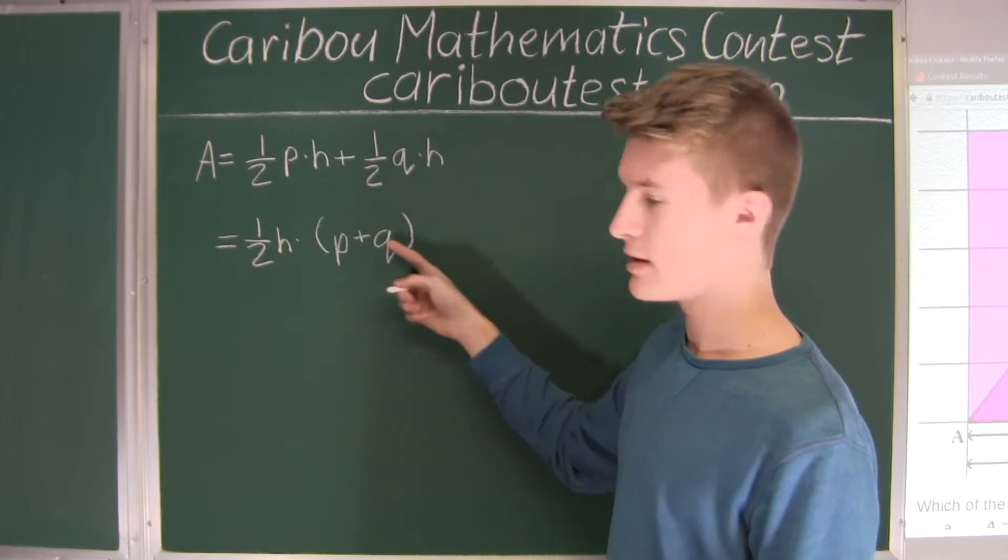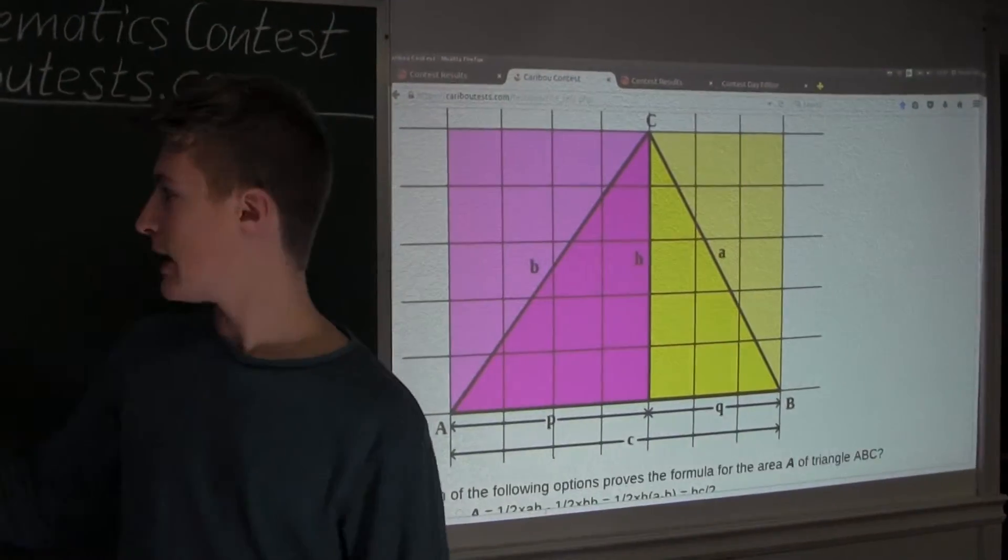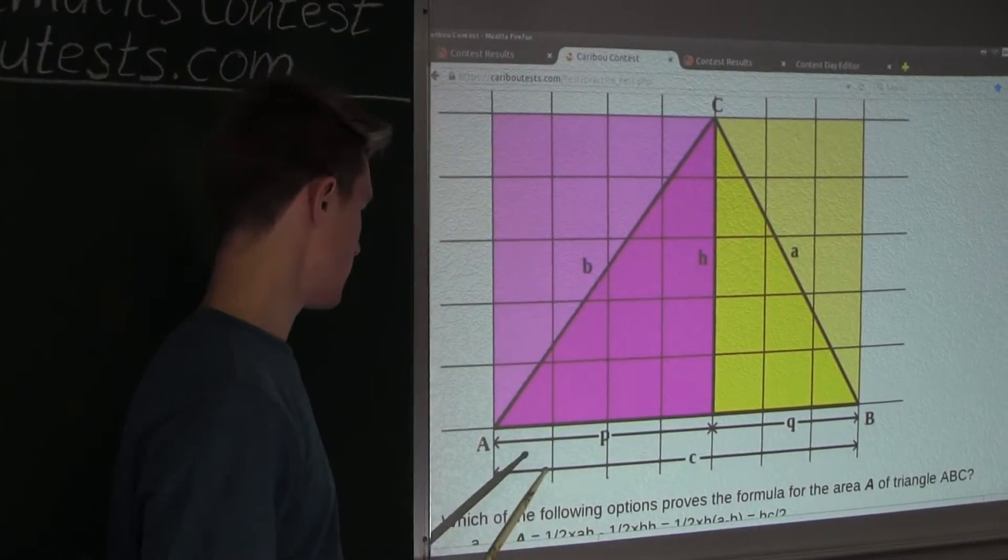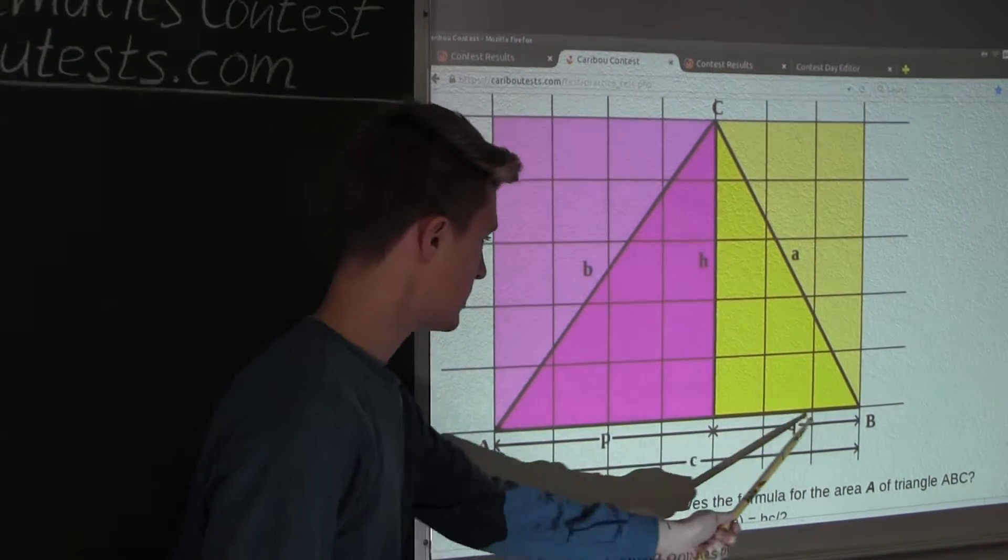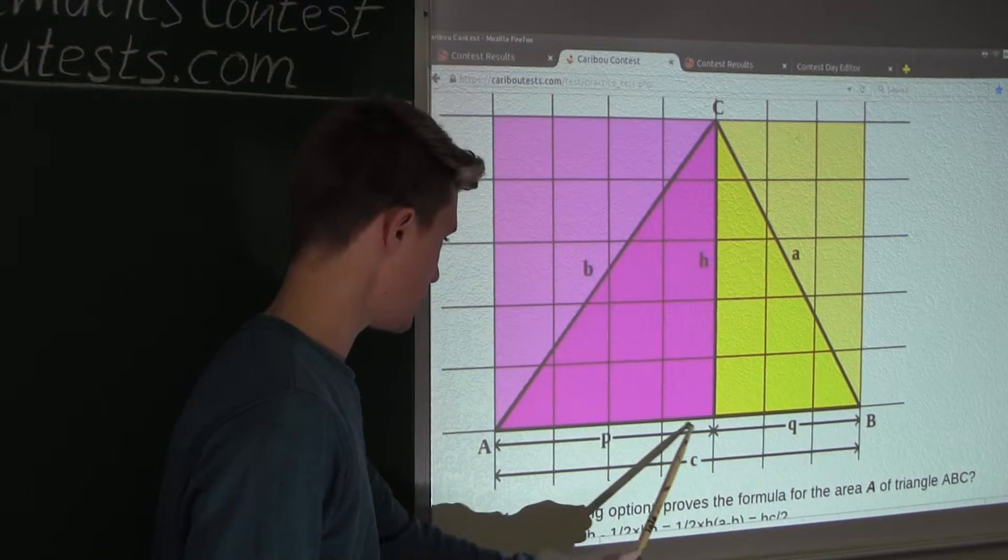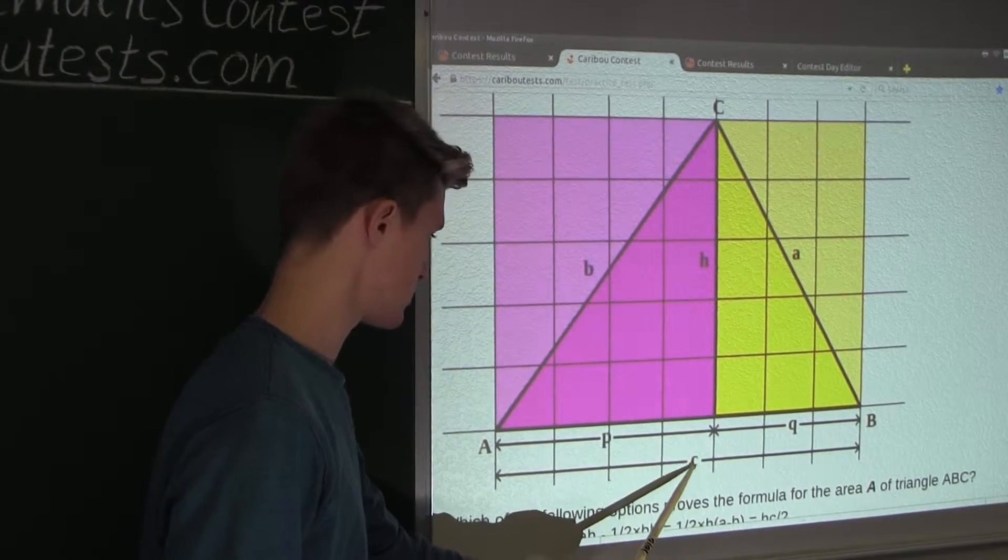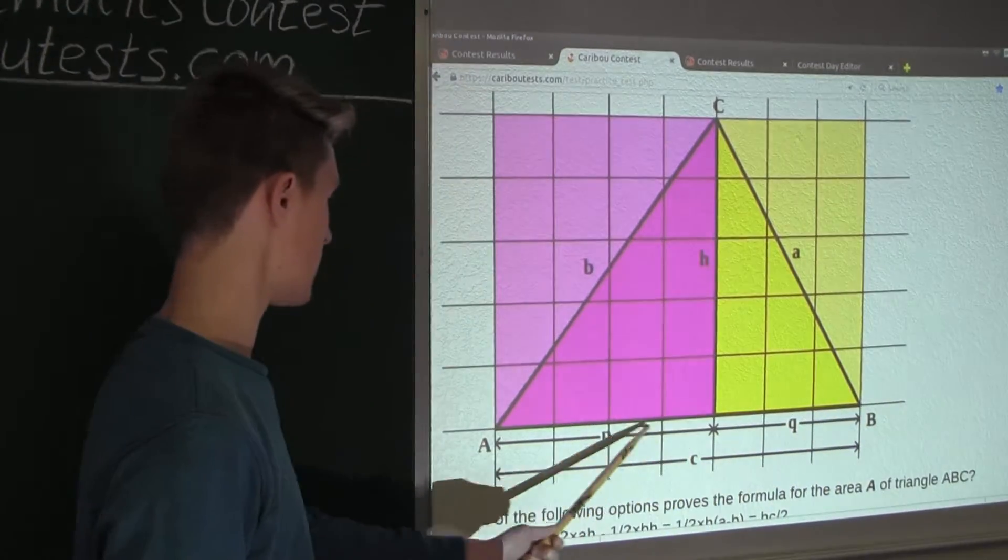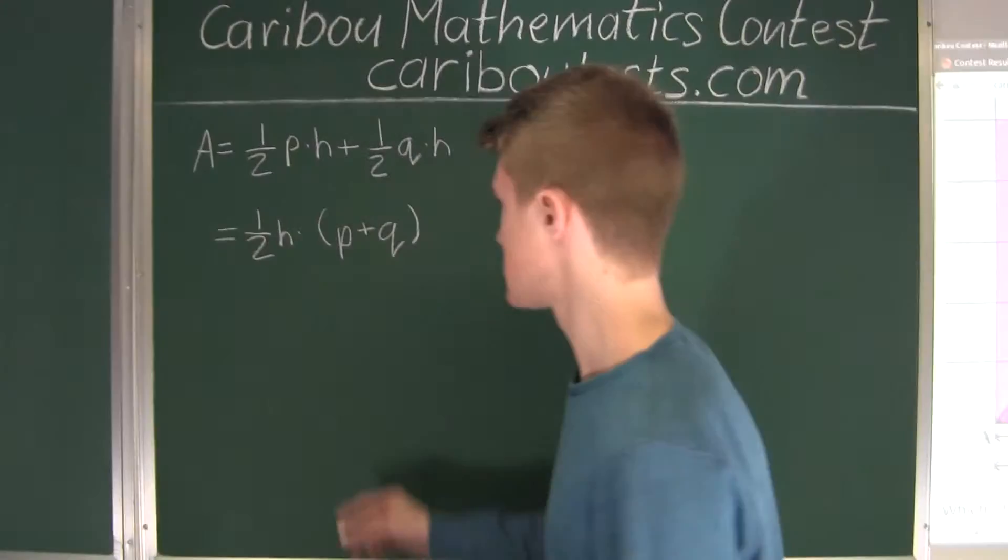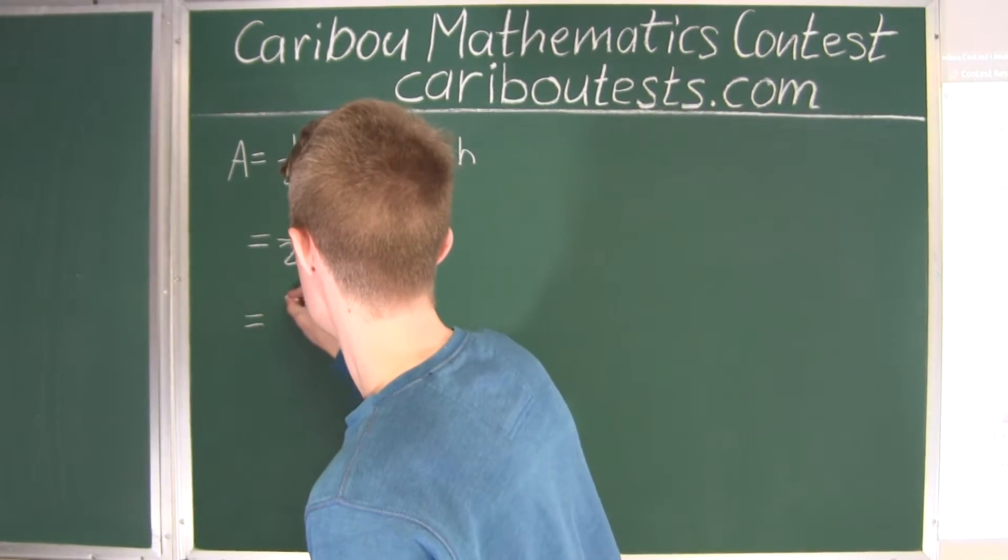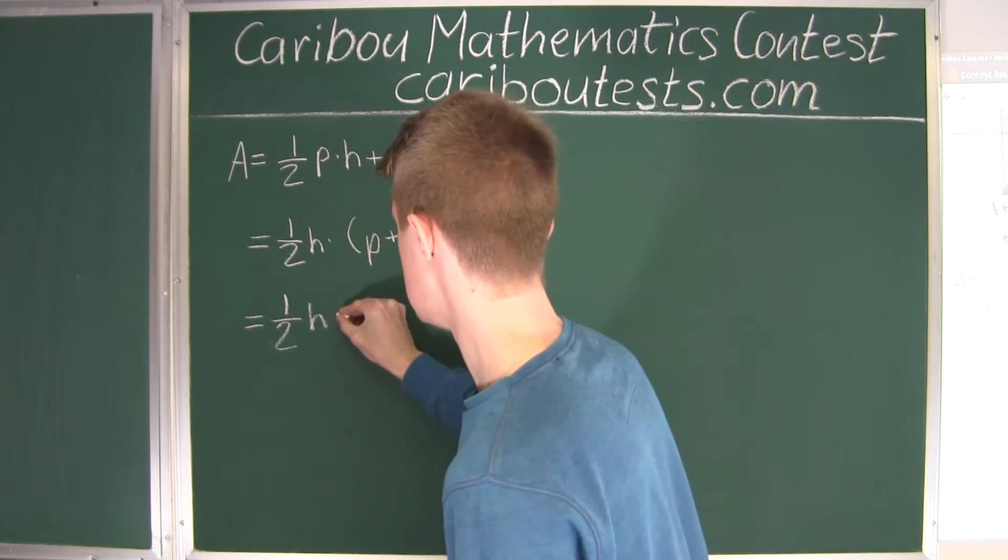And as we can see, this is now our product. And now here we have 1 over 2 H times P plus Q. Well, if we look at this diagram here, we have P and we have Q. And if we added P plus Q, well, if we look below, that would just give us this, which we already know is C. And that is just the bottom length. So we can rewrite this as 1 over 2 H and then multiplied by C.